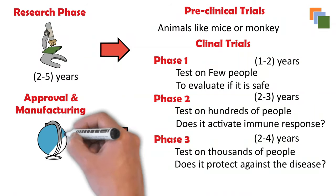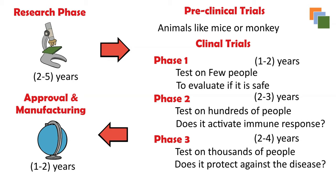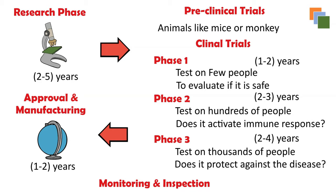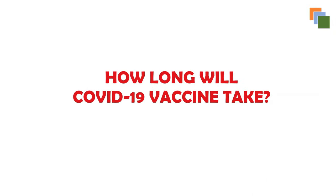Once phase three trials are successful, the approval and manufacturing stage begins. Vaccine manufacturers submit an application to a regulatory body such as the European Commission or the U.S. Food and Drug Administration (FDA). All trials are reviewed to ensure the vaccine is safe and effective. Even after approval and licensing, regulatory agencies continue to monitor production, inspecting manufacturing units and testing vaccines for potency, safety, and purity.